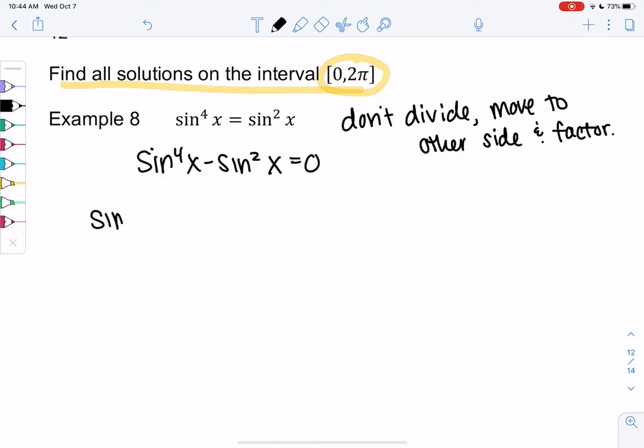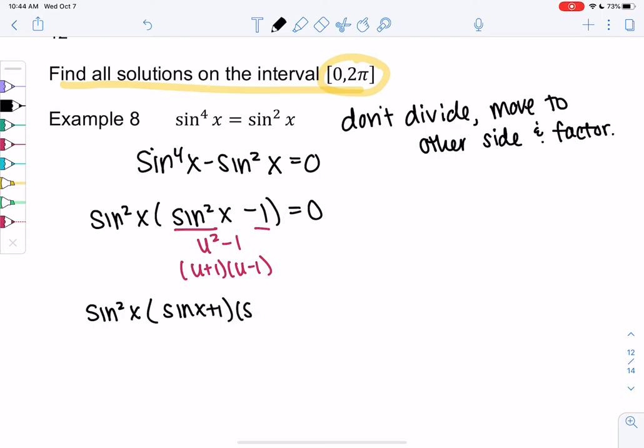So we can factor out a sine squared. And so we're left with sine squared minus 1. This one might be easier to factor, but you could write it as u squared minus 1, so you'll get u plus 1 and u minus 1. Right, it's a difference of squares. So we'll get sine of x plus 1, and we'll get sine of x minus 1. All equals 0.